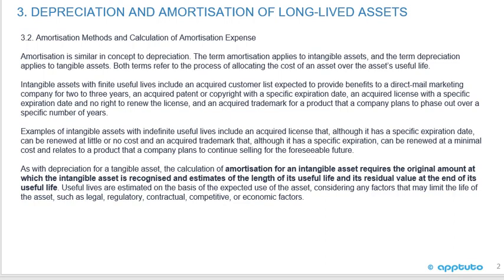Recall that if there's an infinite life, the intangible asset is not amortized. Examples of intangible assets with indefinite useful lives include an acquired license that, although it has a specific expiration date, can be renewed at little or no cost, and an acquired trademark that, although it has a specific expiration date, can be renewed at minimal cost and relates to a product a company plans to continue selling for the foreseeable future. These are fine details that a multiple choice question could easily be based on.